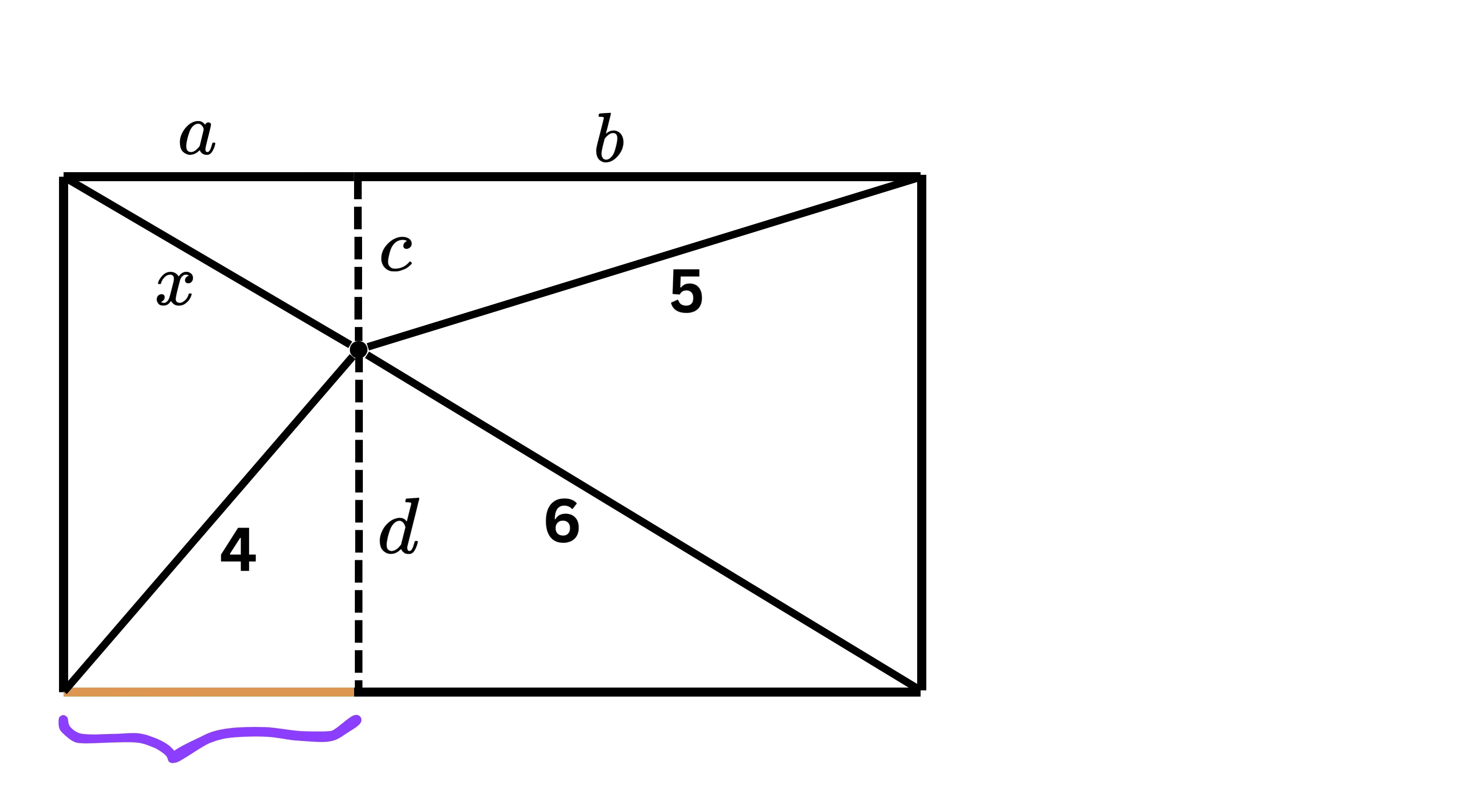So, this length will also be equal to the length of this piece, right? Thus, it will also be A. Similarly, this length will also be equal to the length of this piece, and thus it will be B as well. So, now we have four right-angled triangles formed inside the rectangle.